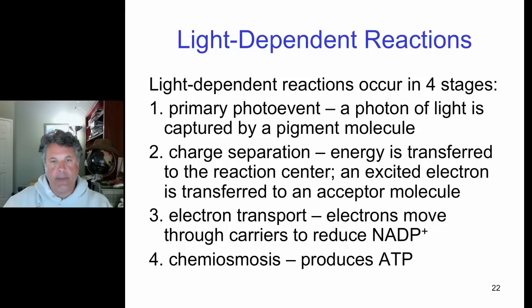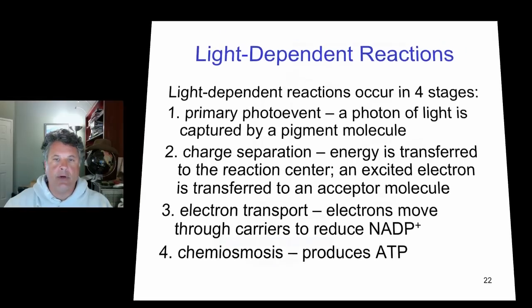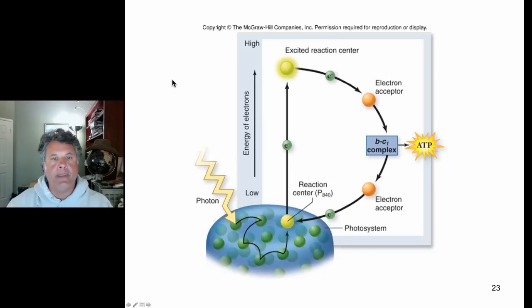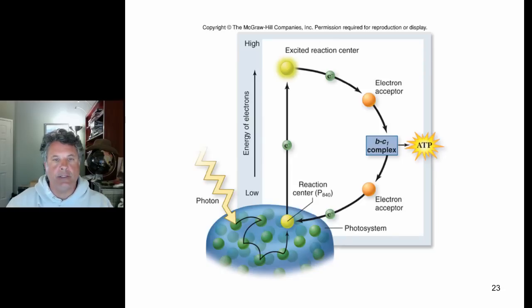There are bacteria — the green sulfur bacteria and the purple non-sulfur bacteria — that do not use water as an electron donor. Instead they have cyclic electron transfer, in which electrons are not replaced by water but are cycled back to the photosystem. We'll pick that up in the next part of this lecture before moving on to the two photosystems found in plants and some bacteria and algae.